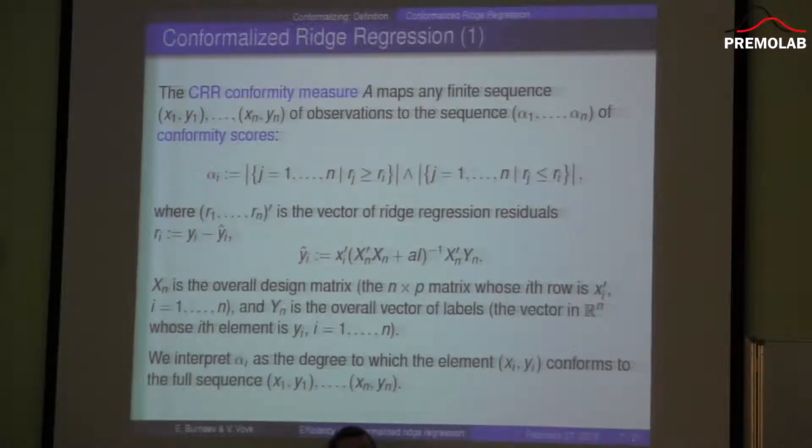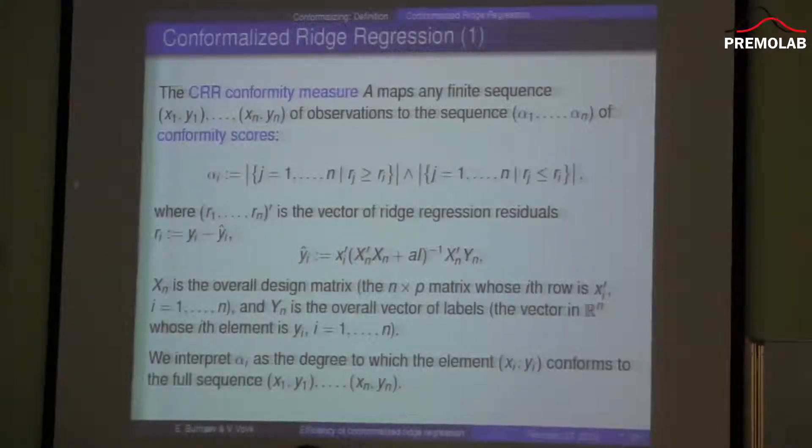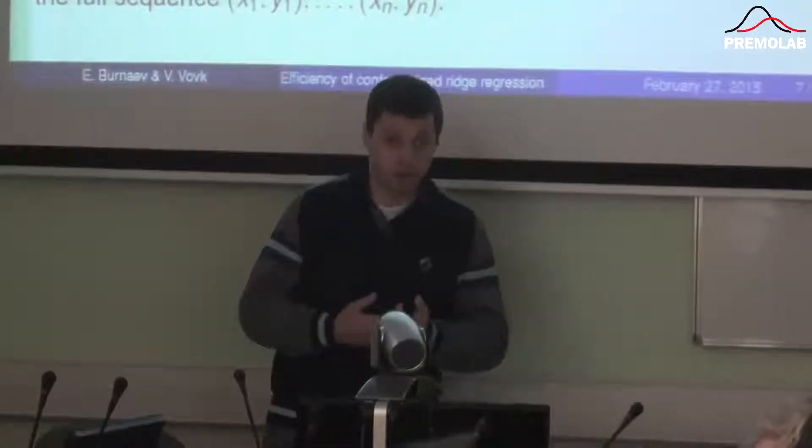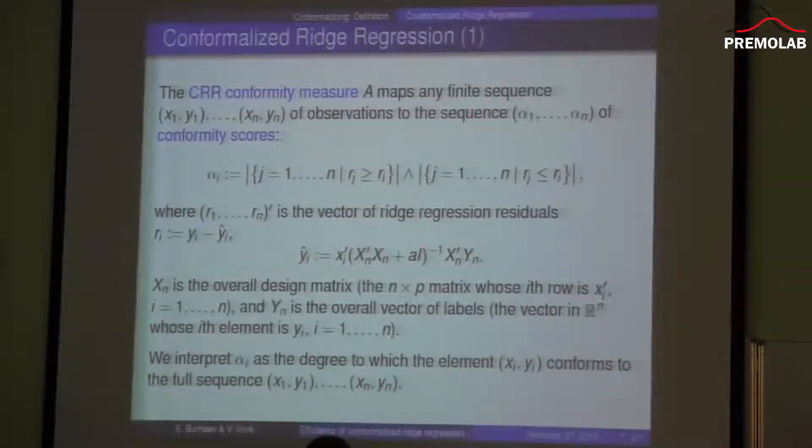This is the model we will deal with. Now I would like to tell you about what is conformalized regression. The idea is the following. First of all, we have to define a so-called conformity measure, which maps any finite sequence of observations to the sequence α_1, α_n of conformity scores. The main thing is that the conformity measure shows to which degree the considered element conforms to the full sequence.